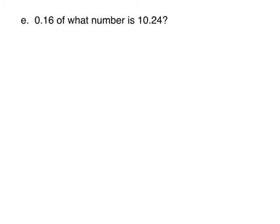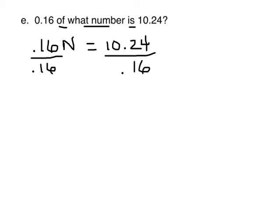We're going to have sixteen hundredths of what number is. We're going to take those and we're going to turn them into an equation. Sixteen hundredths times n, and I don't even need the times because I know when they're side by side like that that means to multiply, is 10 and 24 hundredths. And if this has been multiplied, the only way to cancel it out is to divide by.